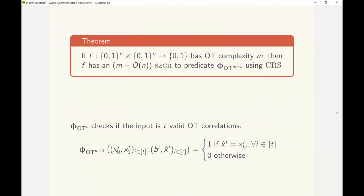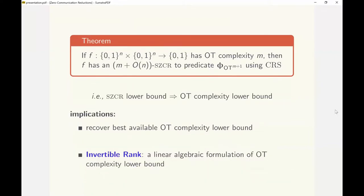The complexity of the SZCR is in the order of the size of the function and OT complexity of the protocol. The theorem implies that a lower bound on SZCR complexity or the size of the support check predicate implies a lower bound on OT complexity.